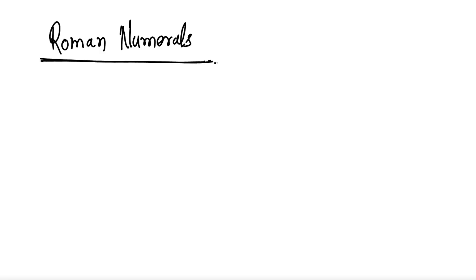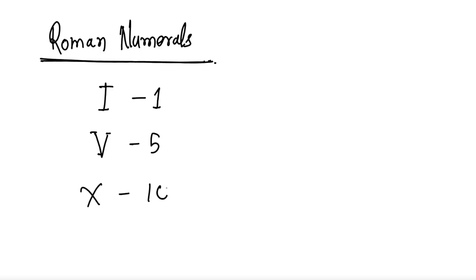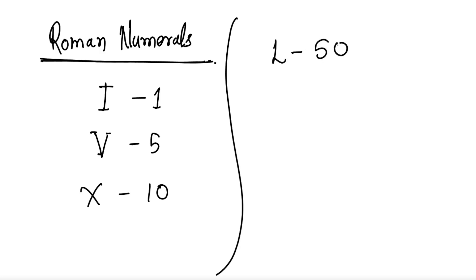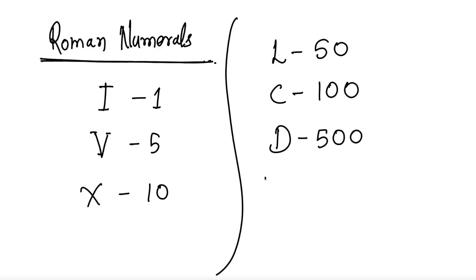In Roman numerals there are only seven signs. Like: I for one, V for five, X for ten, L for fifty, C for hundred, D for five hundred, and M for one thousand. It's very simple.